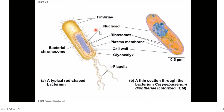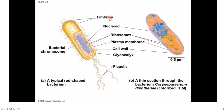Here you can see a micrograph and its diagram, which shows the structures of prokaryotic cells. As you can see, there is a plasma membrane and no other membranes. There are ribosomes. There is usually a cell wall which covers the plasma membrane. Inside the cell there is cytoplasm, and DNA is directly found in the cytoplasm.